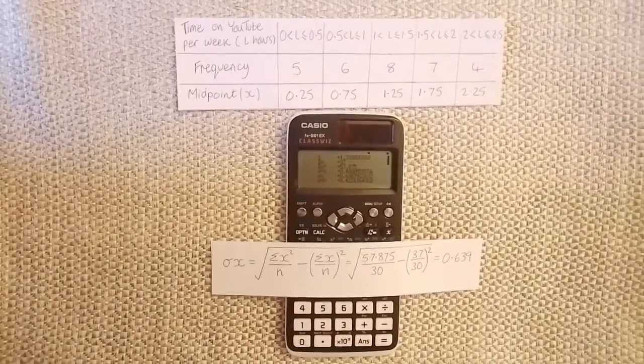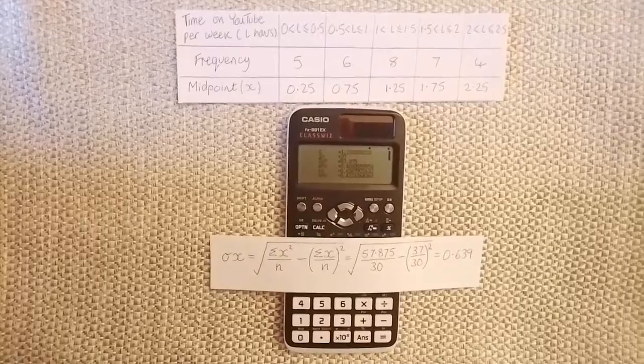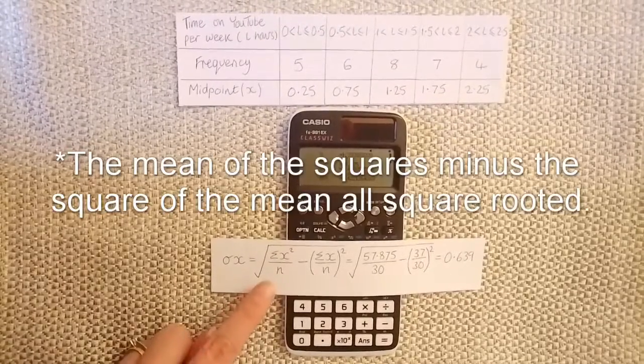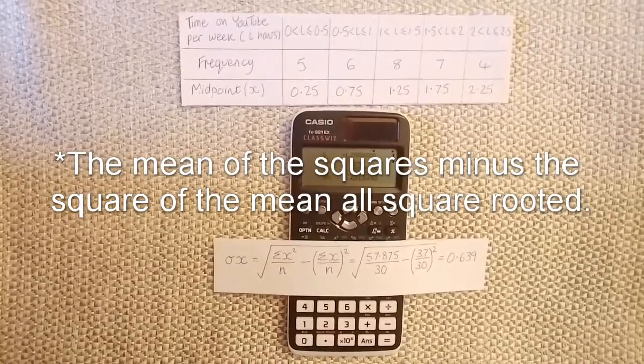Sigma x is standard deviation. To present this along with working out, we need the sum of the squares minus the square of the mean, all square rooted.